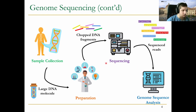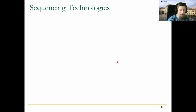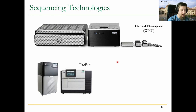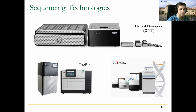Let's briefly look at these machines because they really affect what we need to do in the downstream stage. There are a bunch of sequencing technologies; some of the most popular ones are ONT, PacBio, and Illumina. These have different properties — some are more accurate, some are faster or cheaper. But the most important thing for now is the cost reduction that these technologies have brought us in recent years.